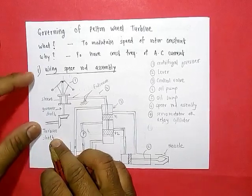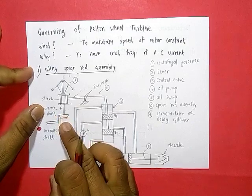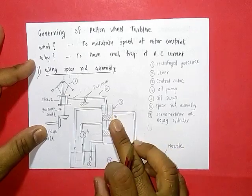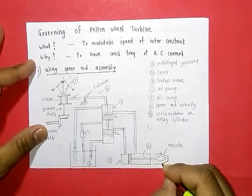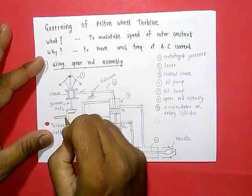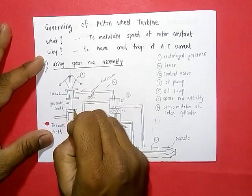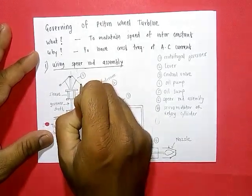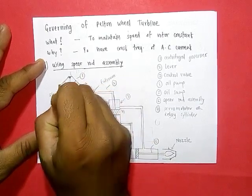The turbine shaft is geared with the governor shaft. When the turbine operates at rated speed, both valves are closed and the spear rod is in its normal position. When the speed of the turbine shaft increases, the governor shaft speed also increases, increasing centrifugal force, causing the governor balls to move outward.